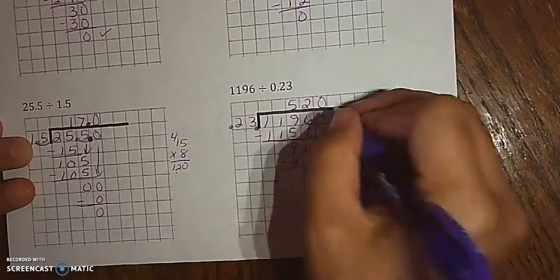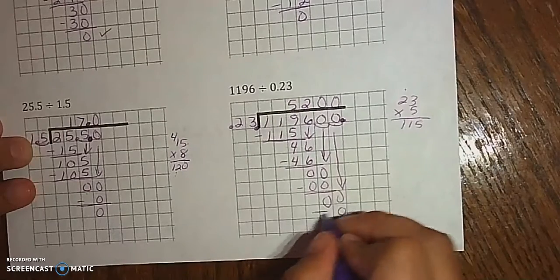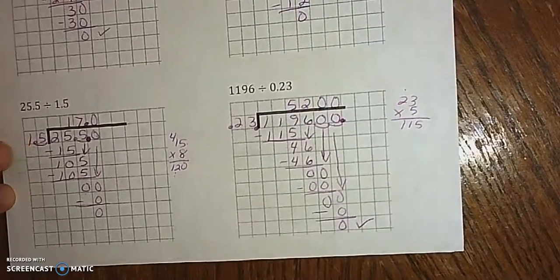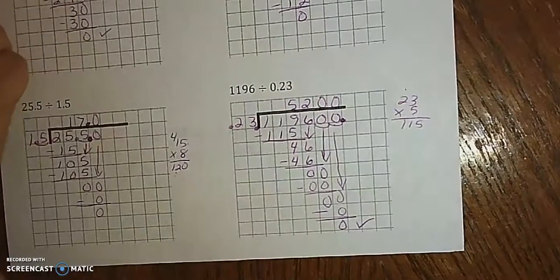And then we have to bring down this 0. 23 goes into 0, 0 times. Now we have no remainder, and our answer is 5,200. Make sure these get put into your notes.